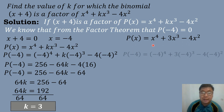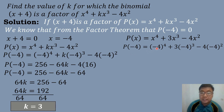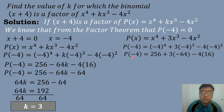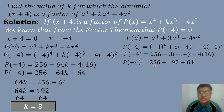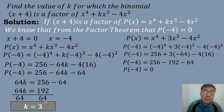We then verify by evaluating P of negative 4 with K equals 3. So P of negative 4 equals negative 4 to the 4th power plus 3 times negative 4 cubed minus 4 times negative 4 squared. That gives 256 plus 3 times negative 64 minus 4 times 16, which equals 256 minus 192 minus 64, and that equals 0. Therefore, the value of K equals 3 is correct because the remainder is equal to 0.